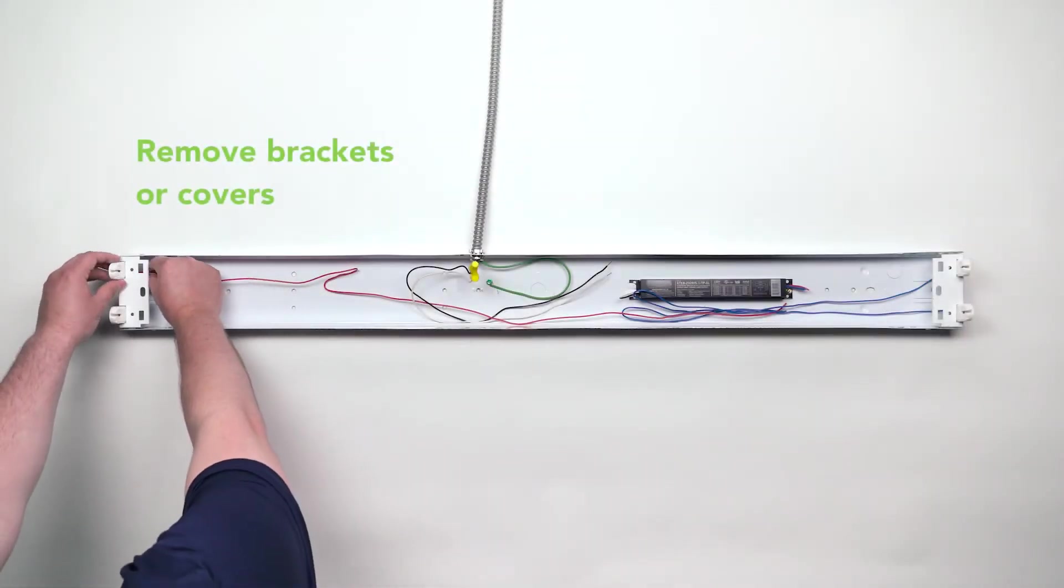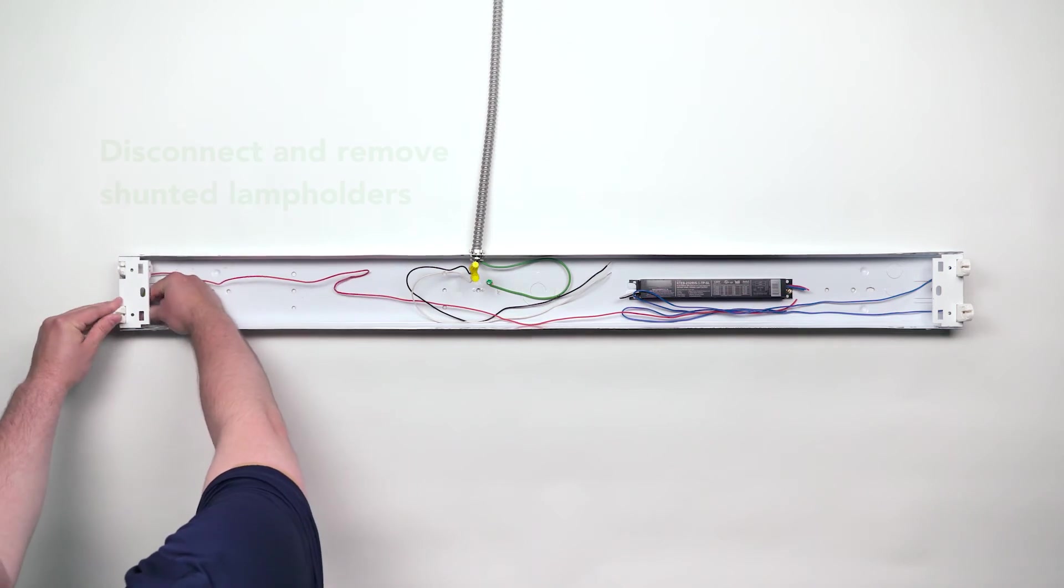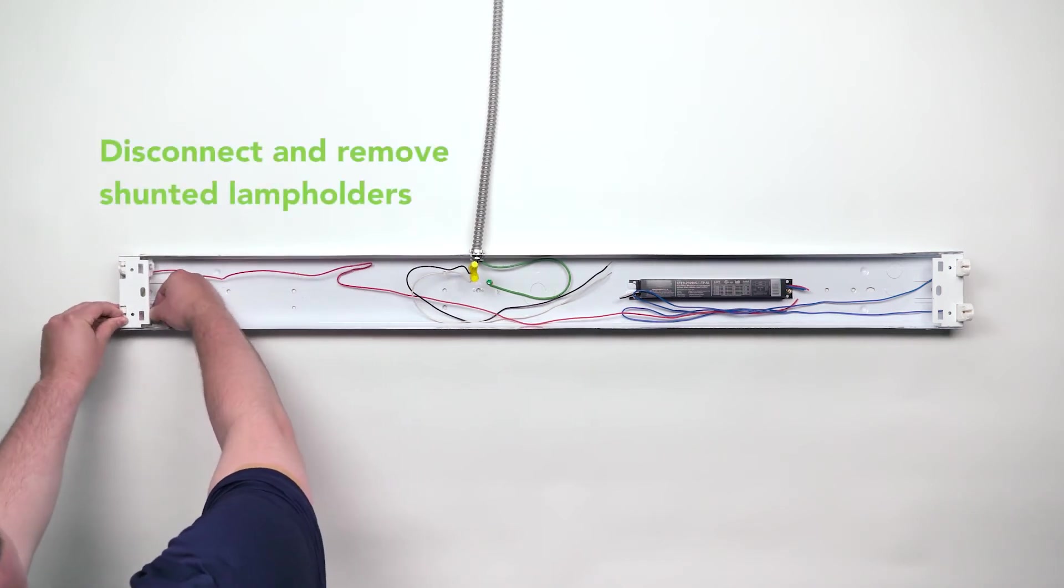Remove any brackets or covers holding the shunted lamp holders in place. Then pinch to disconnect and remove the shunted lamp holders.